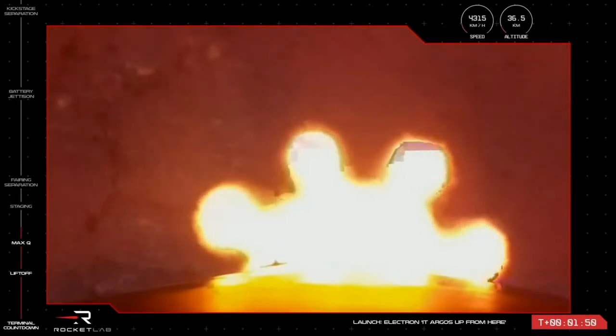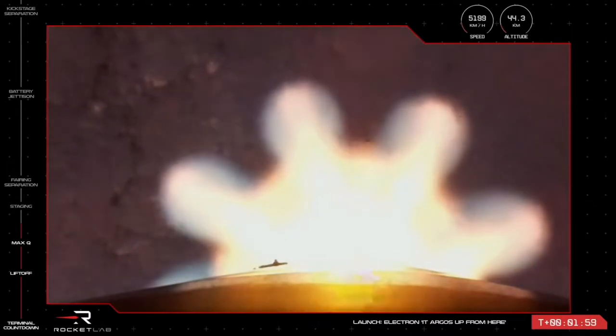Separation of the first and second stages is next, and you'll see the first stage drop away from the stage two body. And lastly, to continue our journey to orbital insertion, we'll see ignition of the single Rutherford engine on Electron's second stage, continuing the journey to deliver the Gazelle spacecraft to its destination.